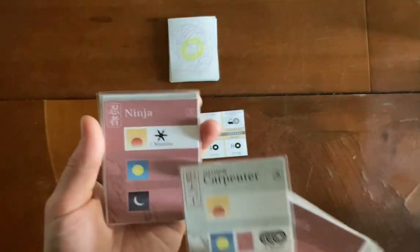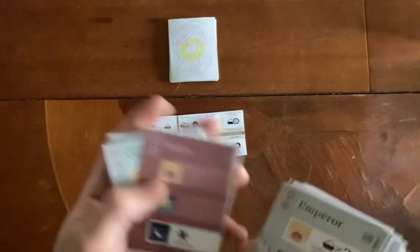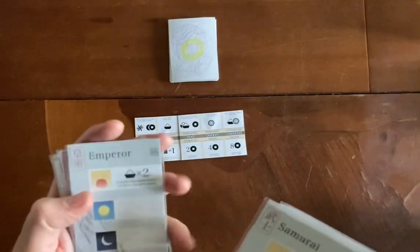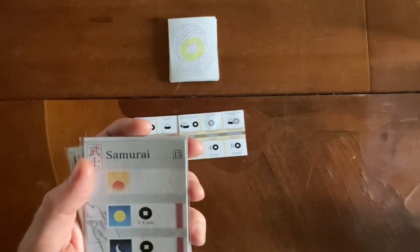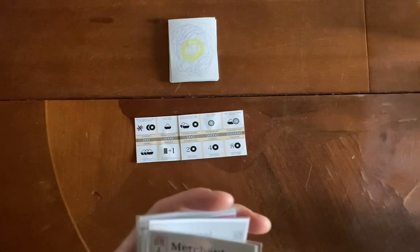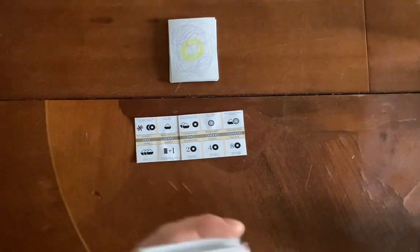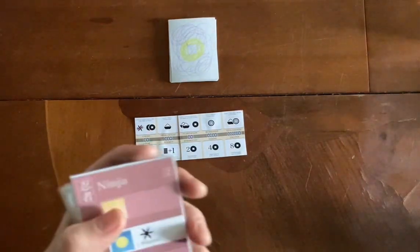There's the ninja who attacks in the morning. There's the ninja who attacks in the night. There's the samurai who protects the town in the day or the night and makes one coin. Because that's how he gets paid, like a security guard.